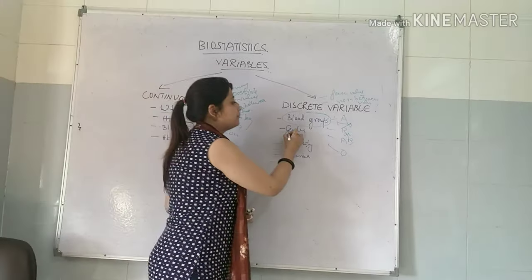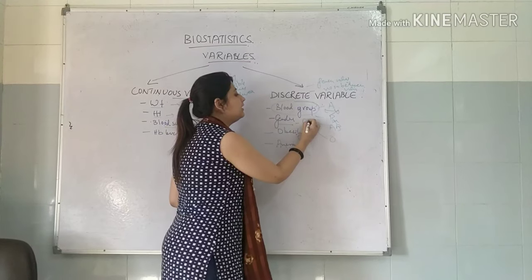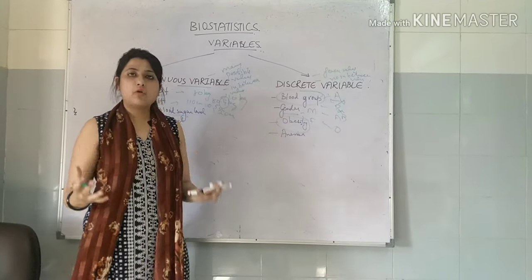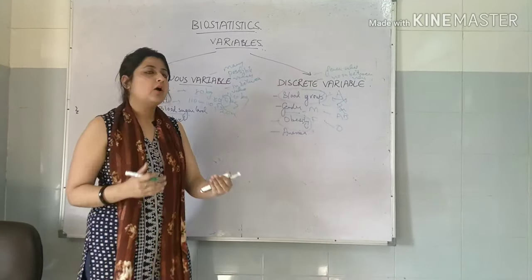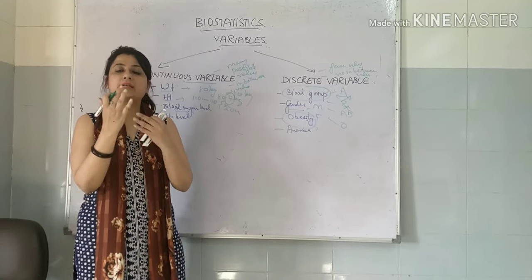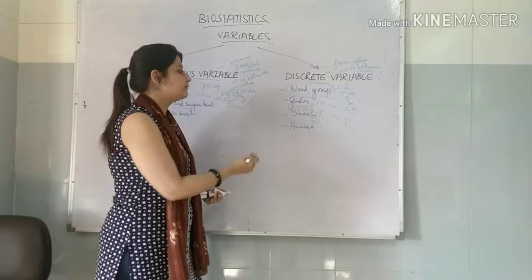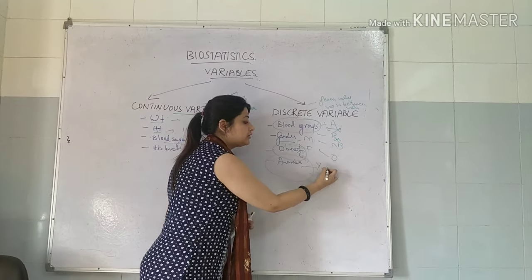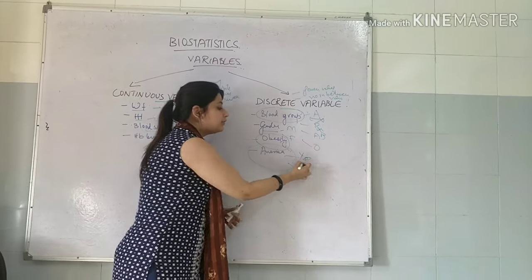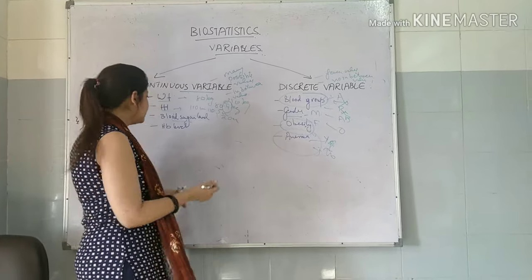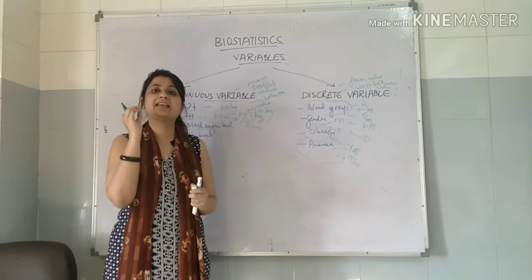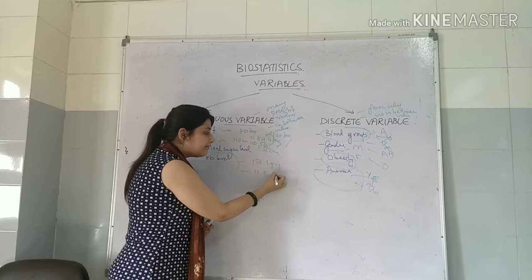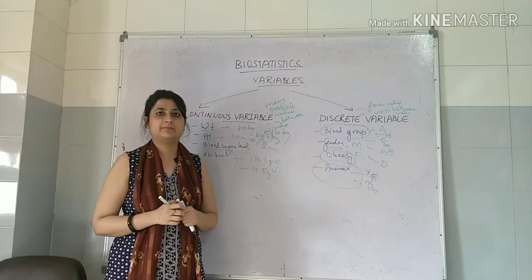Similarly, take the example of gender — you will either be male or female; you cannot lie in between. For any disease, say obesity, you will either be obese or not obese. Similarly for anemia, you can either be anemic or not. However, hemoglobin level can take up exact values like 12.5 or 11.5, and in-between values are also possible.